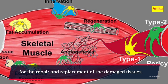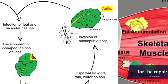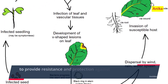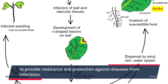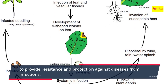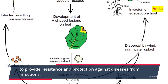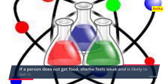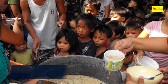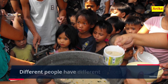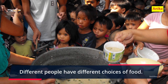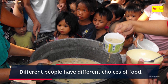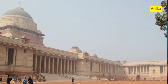If a person does not get food, she feels weak and is likely to fall ill. Different people have different choices of food. There is a wide range of food items eaten across various states of India. Different organisms eat different kinds of food.